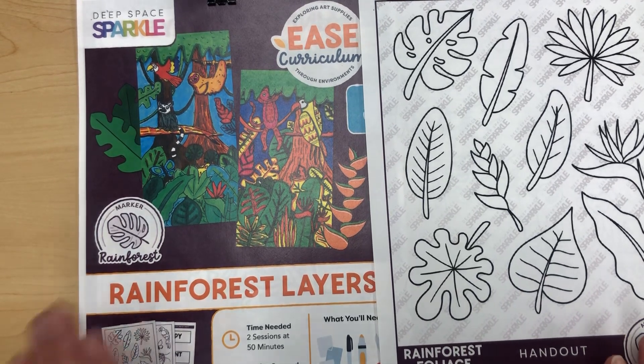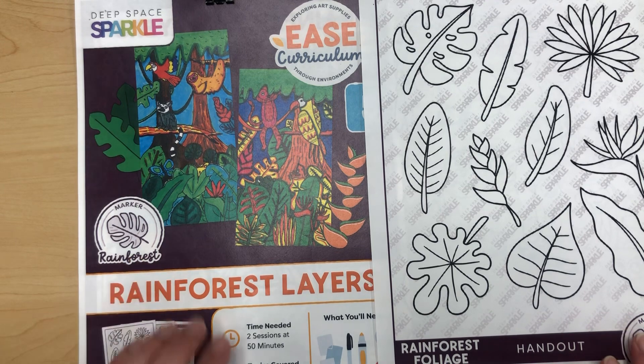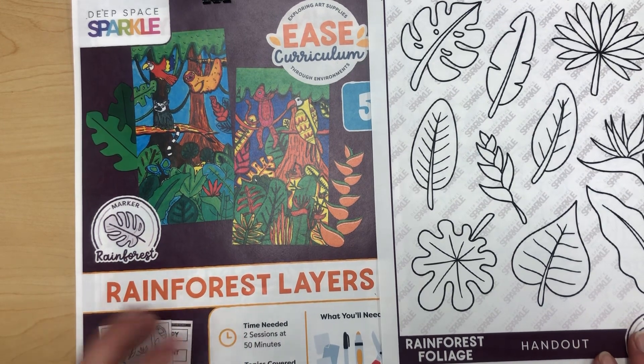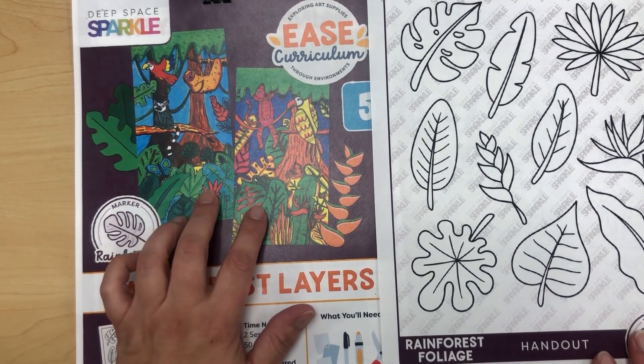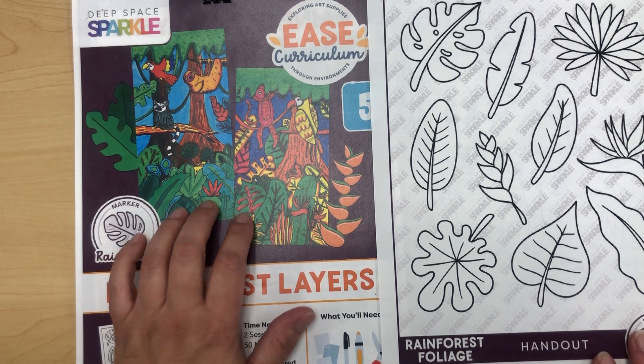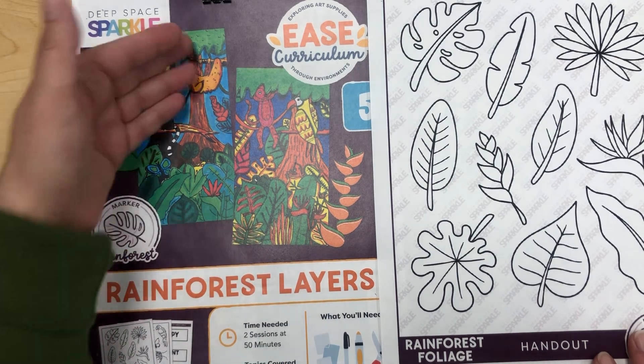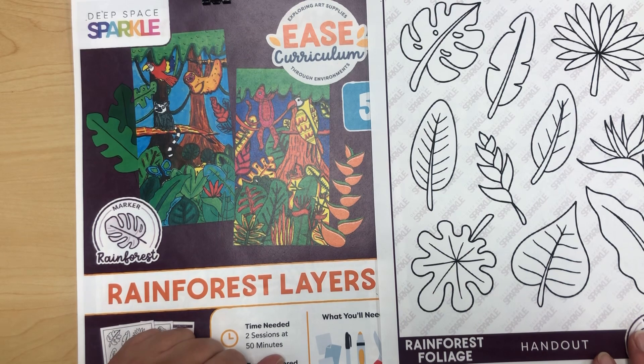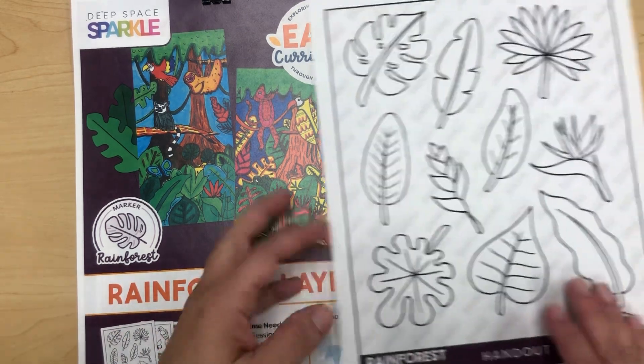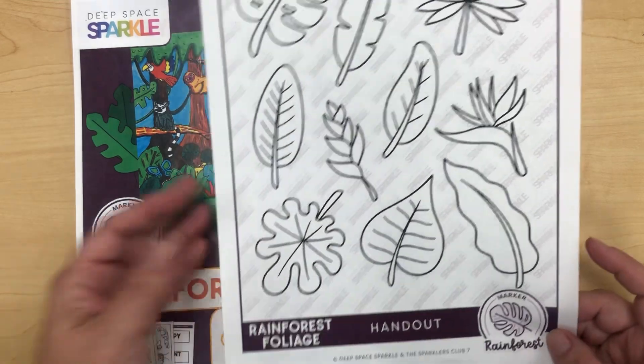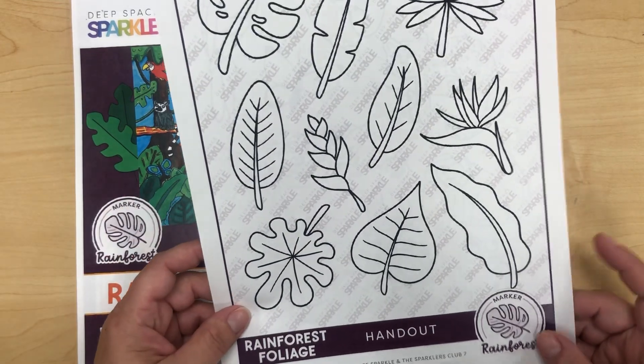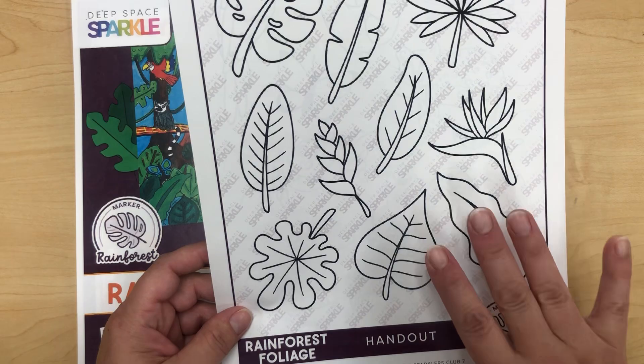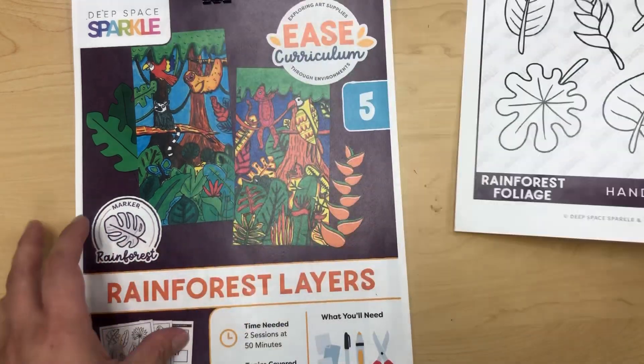Okay, so today we are going to start our rainforest unit and we're going to be creating rainforest layers. There's a couple examples of some finished work. Today we're going to be doing the top and the bottom of your foreground and then folding the paper. This visual right here shows different ideas with jungle leaves that you can add. We'll be using this today, so you'll have a couple of these per table.